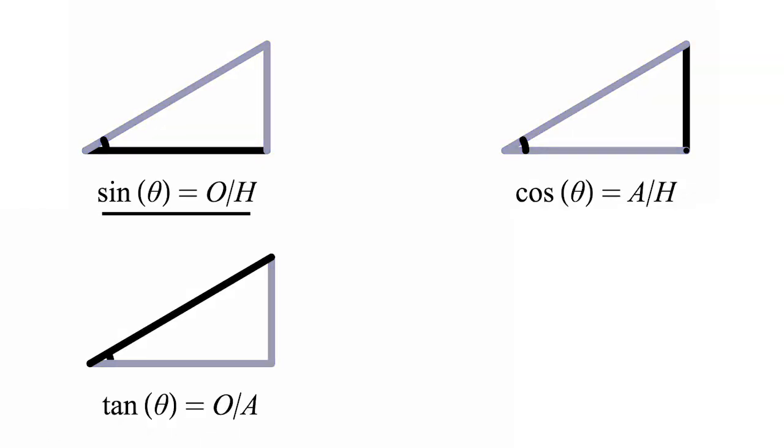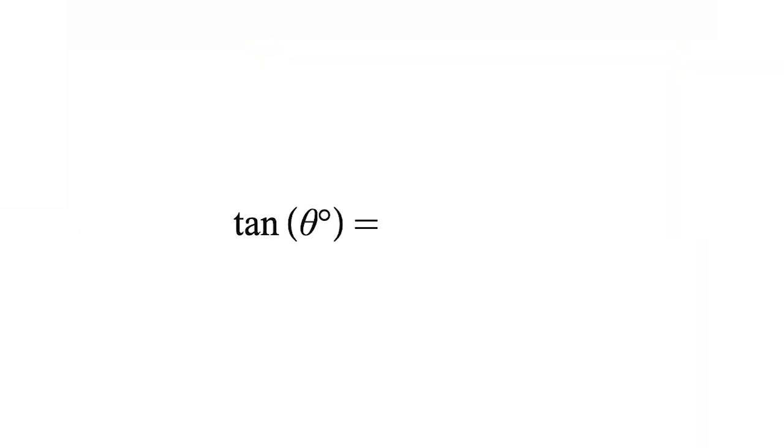If you haven't discovered by now, tan theta is actually equal to sine theta over cos theta. Let's prove this. The sine ratio measures opposite over hypotenuse, while cosine measures adjacent over hypotenuse. If we divide these two and simplify, we end up getting opposite over the adjacent, which is exactly what the tangent ratio measures. Therefore, tan theta is equal to sin theta over cos theta.